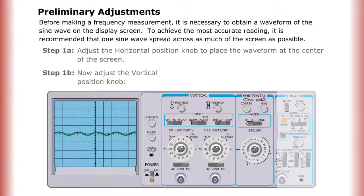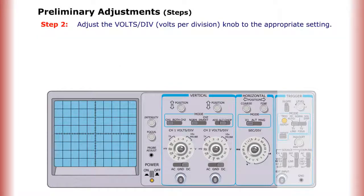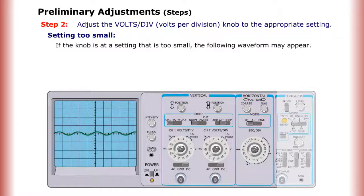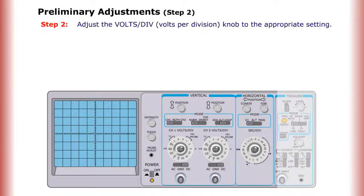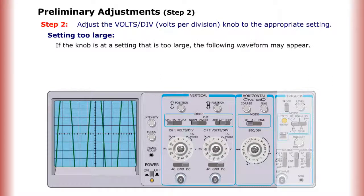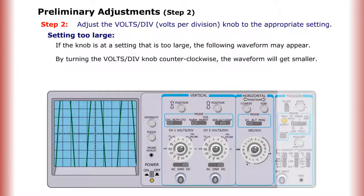Step 2: Adjust the volts per division knob to the appropriate setting. If the knob is at a setting that is too small, the waveform may appear distorted. By turning the volts per division knob clockwise, the waveform will get bigger. If the knob is at a setting that is too large, the waveform may appear compressed.